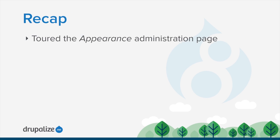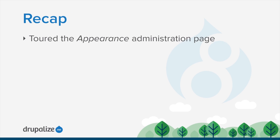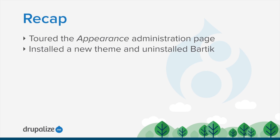In this tutorial, we took a tour of the appearance administration page. We talked about using the updates tab to recognize when a theme you've got installed may need a security update, and we looked at the settings tab and the global settings that it provides. Then we installed a new theme, Mayo, by downloading it from Drupal.org and placing it into the appropriate directory in our Drupal project, and then uninstalled the Bardic theme.